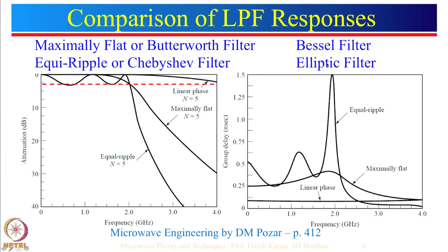The elliptic filter has equiripple response in both the passband and the stopband. The advantage is that for the same 5th order, the transition is very sharp, with equal ripples in the stopband. This allows very fast attenuation of undesired frequencies.